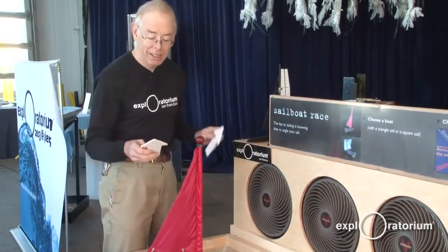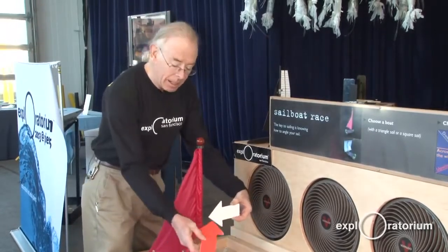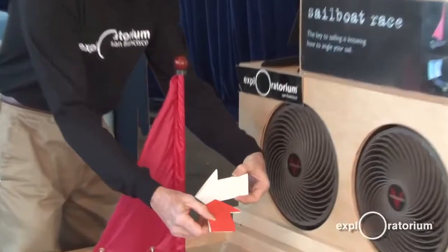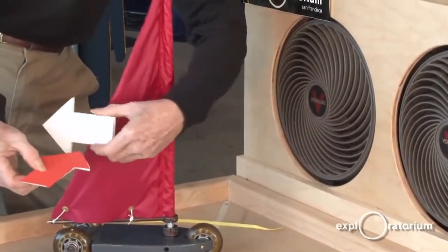there has to be a force exerted by the sail on that wind. And I've represented the force by this orange arrow. It has to push the wind this way to curve it around.